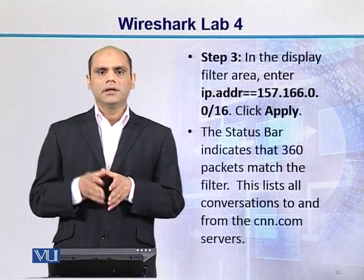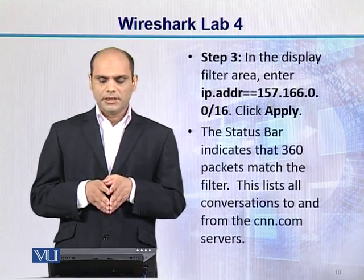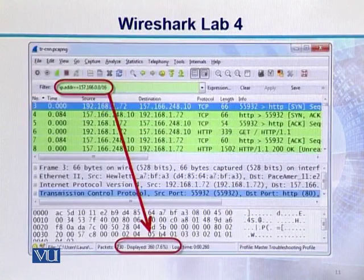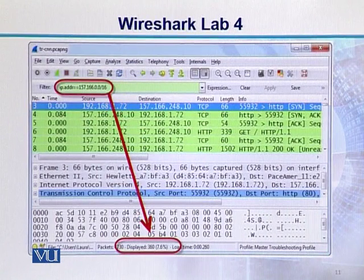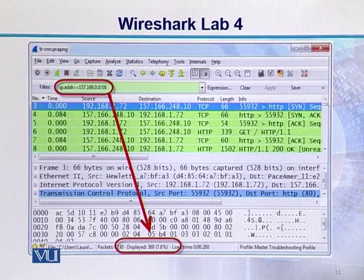Humara jo filter apply karne ke baad, jo status bar hai woh indicate karta hai that there are 360 packets which match this filter. This lists all the conversations to and from the cnn.com servers. Filter ke andar humne ye expression likhi aur Apply ka button press kiya. Apply karne ke baad, jo saari trace file thi, uspe se CNN ke jo servers thay unke packets display hue — 360 such packets, which is about 7.6 percent of the trace file.